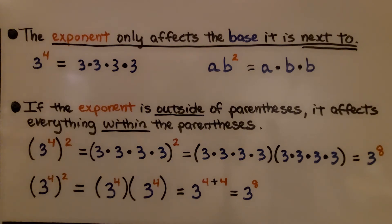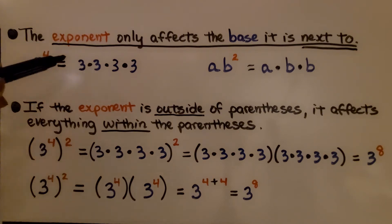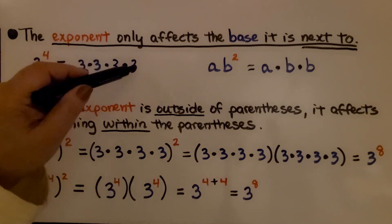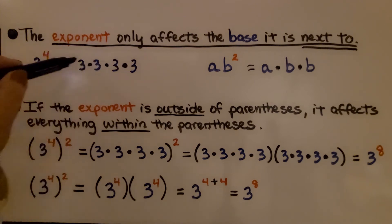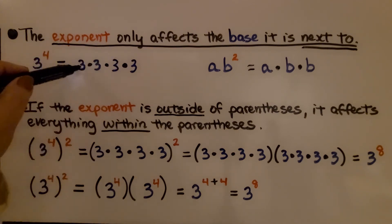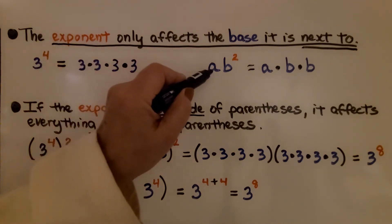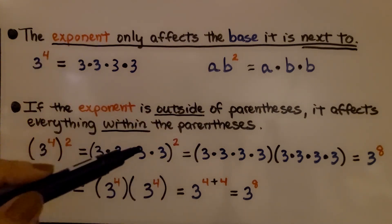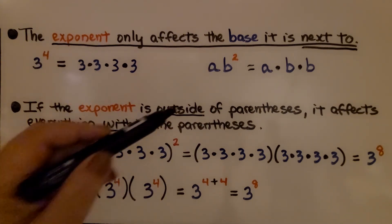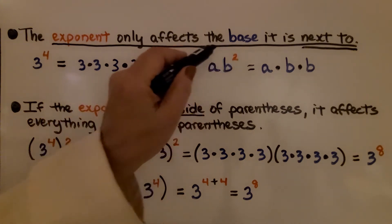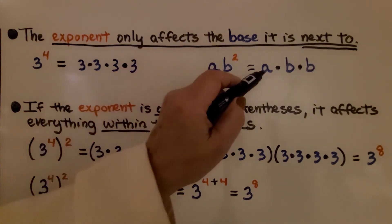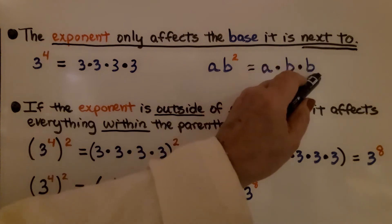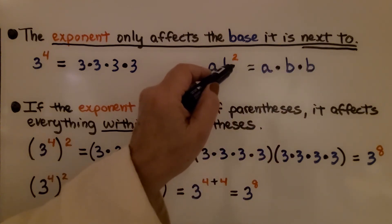The exponent only affects the base it is next to. For example, 3 raised to the fourth power equals 4 factors of 3. If we have a times b raised to the second power, the exponent 2 does not affect the a — this would be a times b times b, giving us 2 b factors.